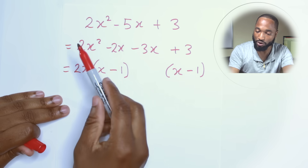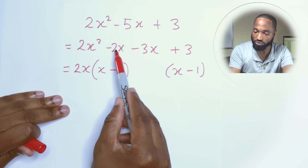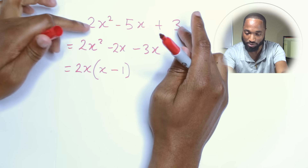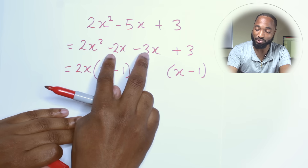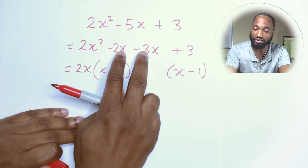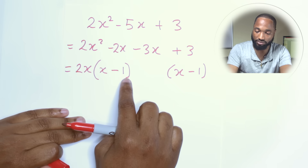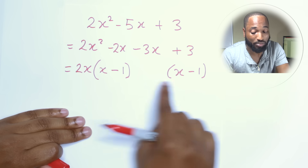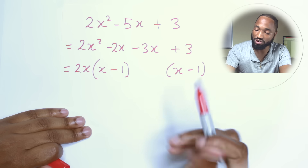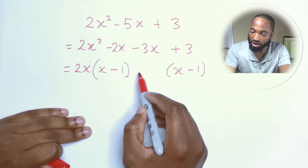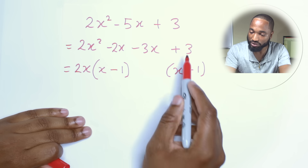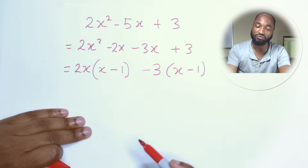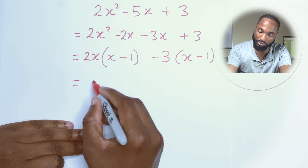We split the middle term into −2x and −3x. We multiplied the two outside numbers, got 6, found the factors, and −2 and −3 add back to −5. Factorizing the first pair gives 2x(x − 1), and for the second pair −3x + 3, we take out −3 to get −3(x − 1). Both brackets are (x − 1), so the final answer is (2x − 3)(x − 1).